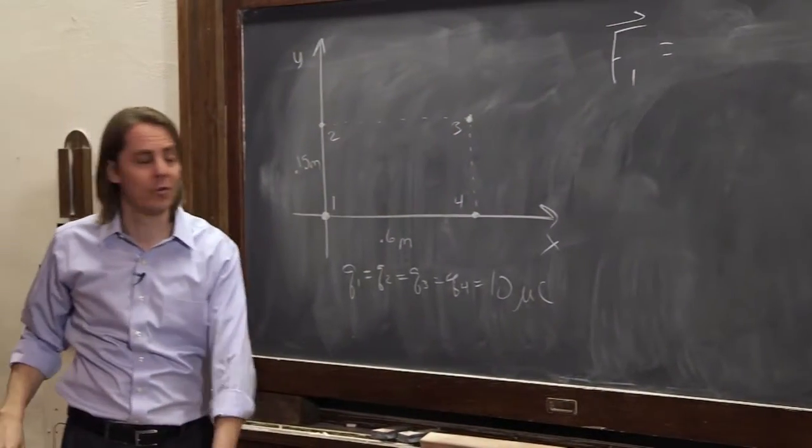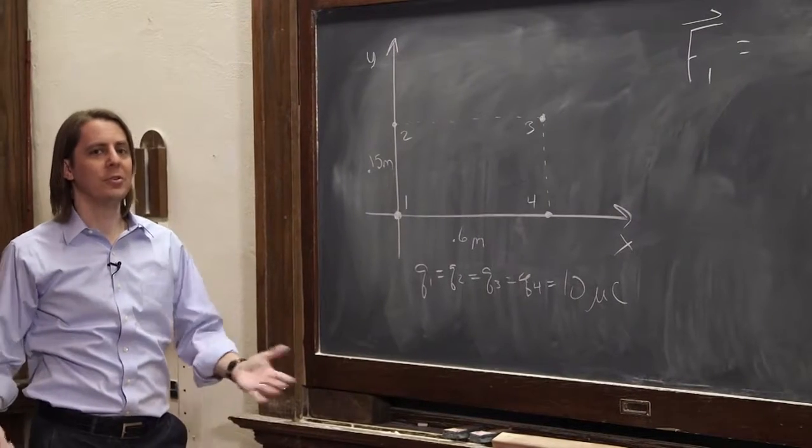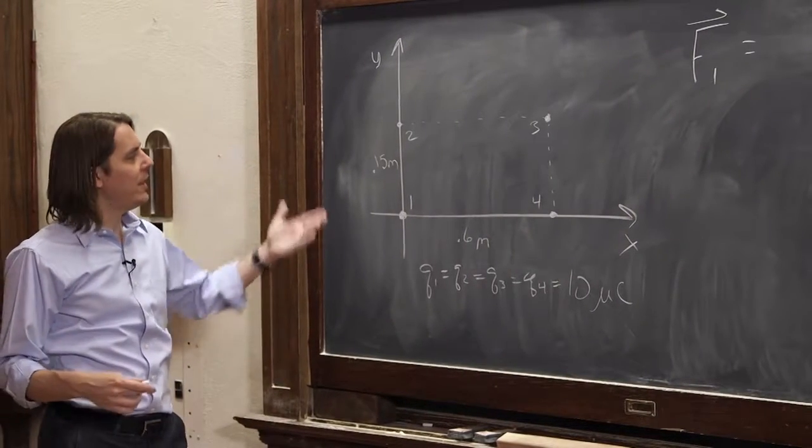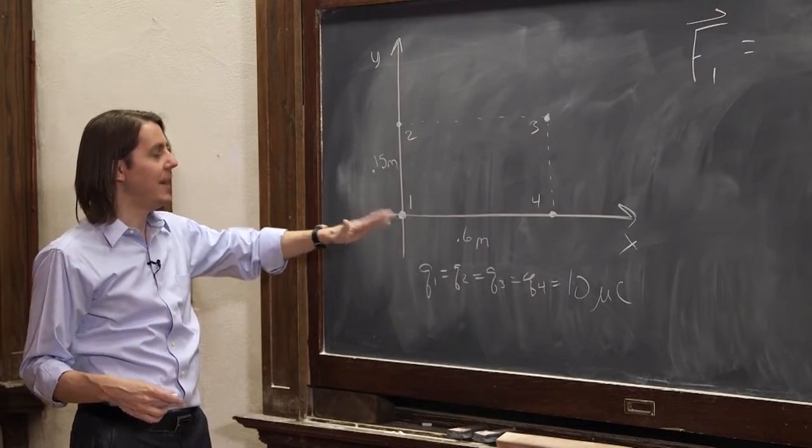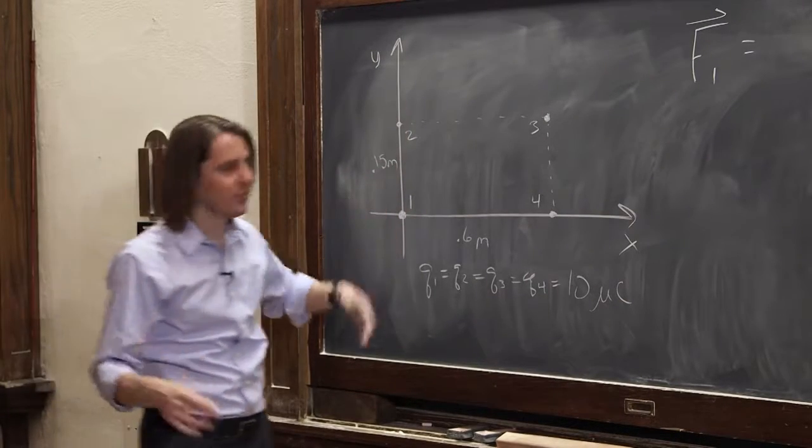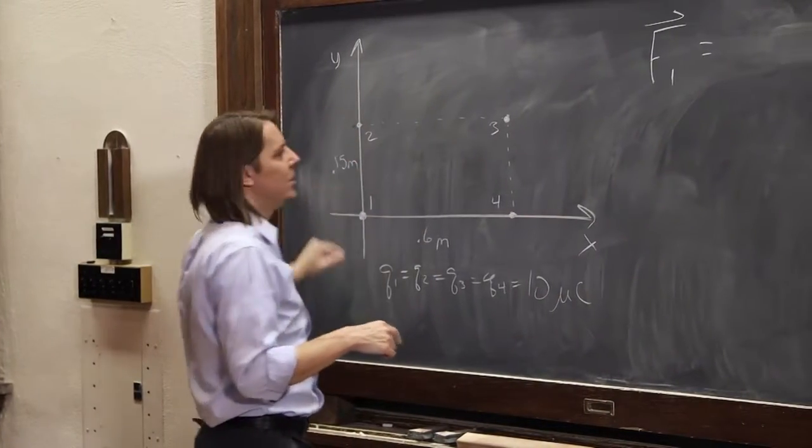We're calculating what is the total force on charge 1. And we're going to use that fancy word superposition. So the way electrostatic forces add in this situation is they just add. You just sum them. So it's superposition.